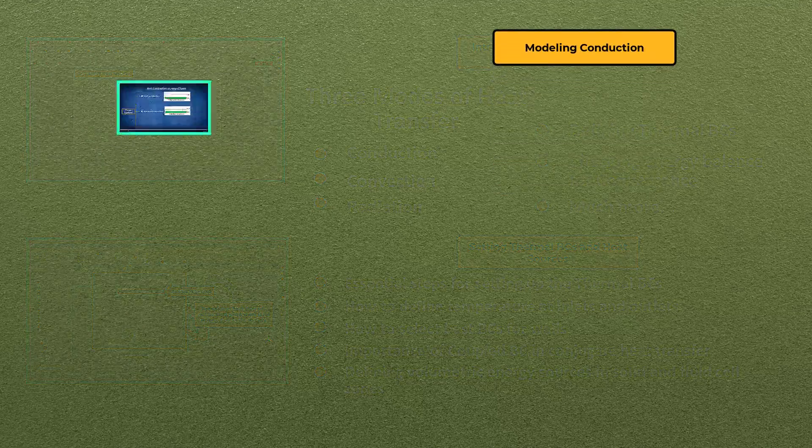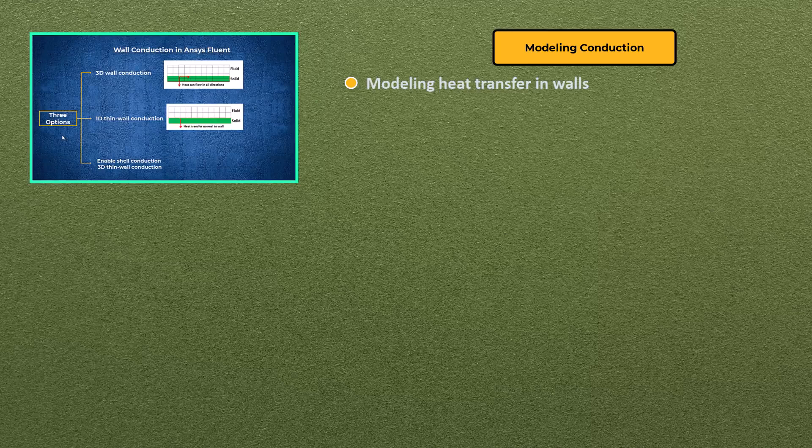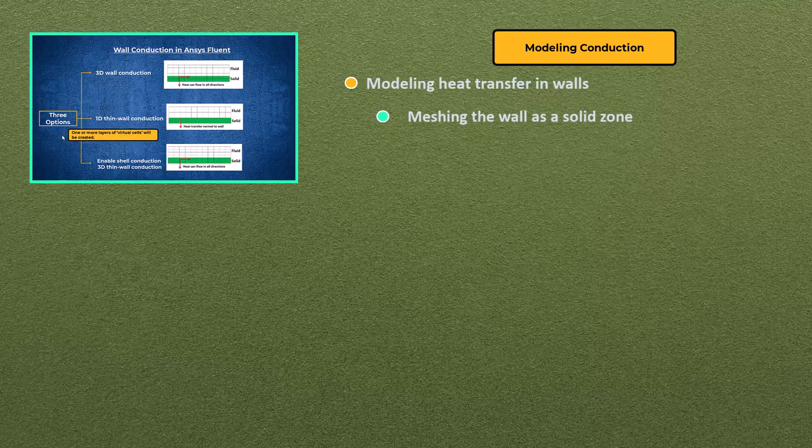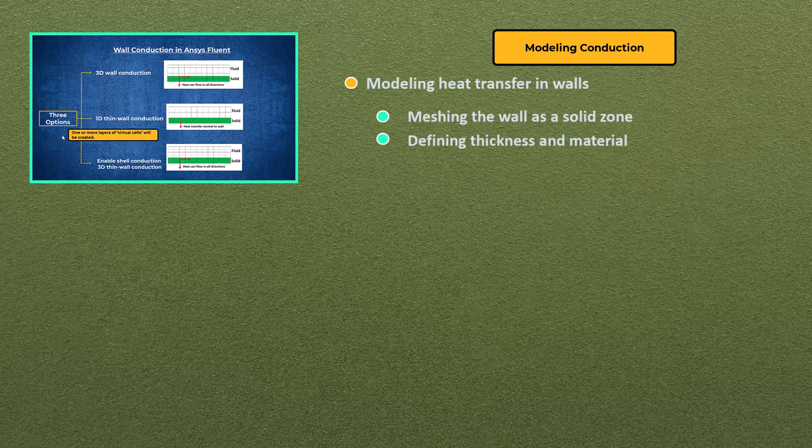In lesson 3, we will explore options for modeling heat transfer in walls, including meshing the wall as a solid zone, defining thickness and material, and using shell conduction.